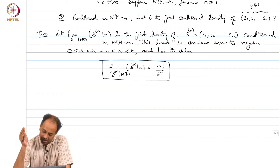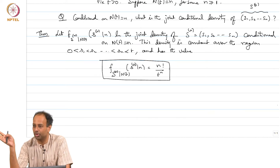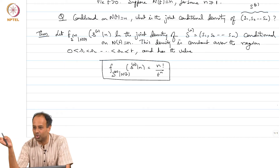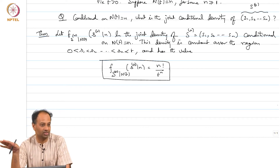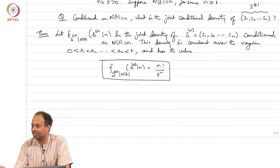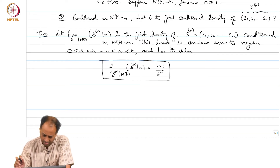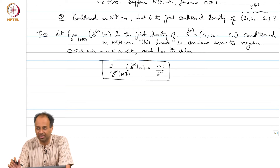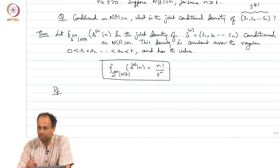This is like the joint density of the order statistics of uniform random variables. You throw n uniforms independently — one turns out to be the smallest, one the second smallest, and so on. The joint density of those order statistics turns out to be exactly this. We need to prove this; the proof is essentially Bayes theorem, and the book gives two proofs.